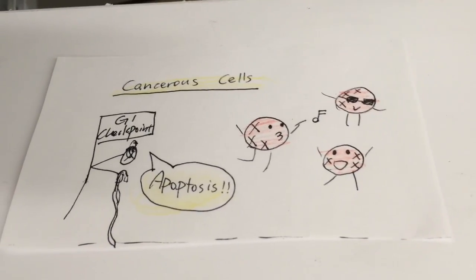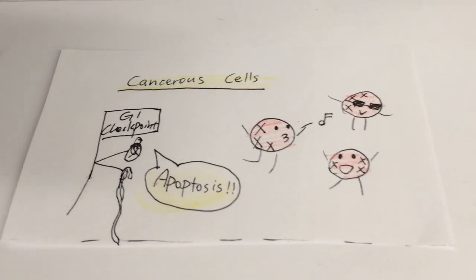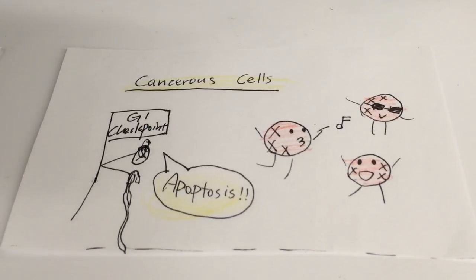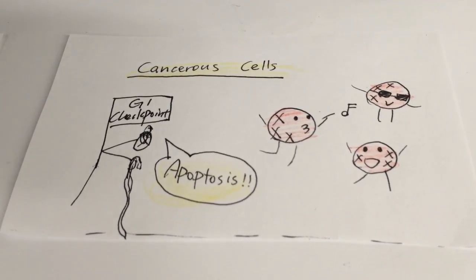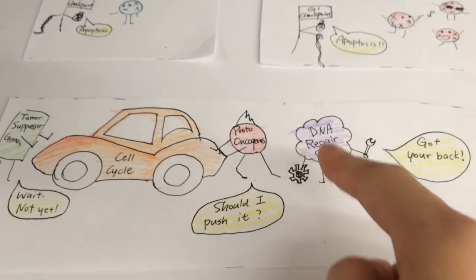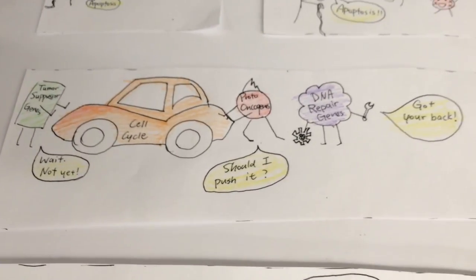Cancer cells, on the other hand, develop the ability to dodge their death. In order to understand how they can do this, one has to look at the three main categories of genes in charge of regulating the cell cycle. They are proto-oncogenes, tumor suppressor genes, and DNA repair genes. The functions of those genes can be best understood when put in parallel with the car analogy.